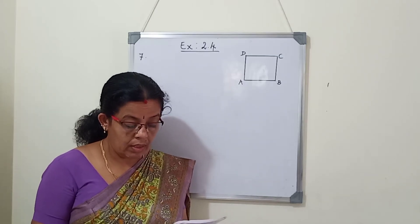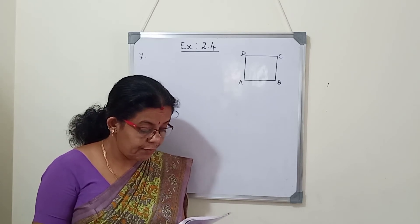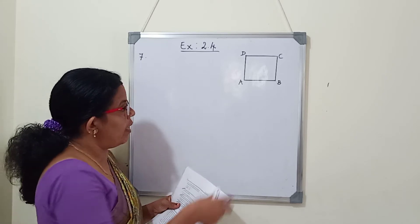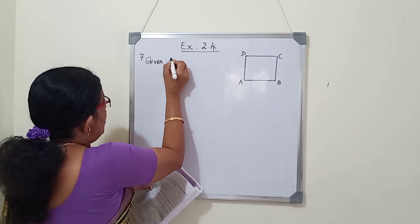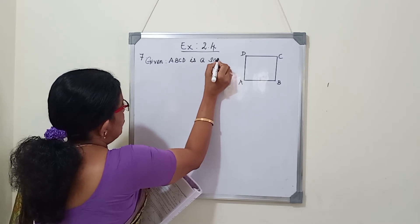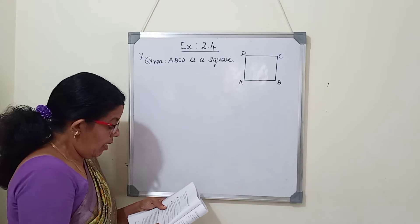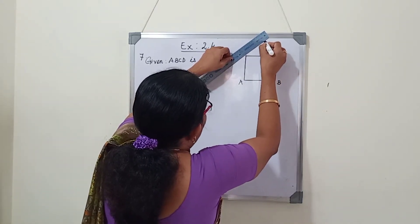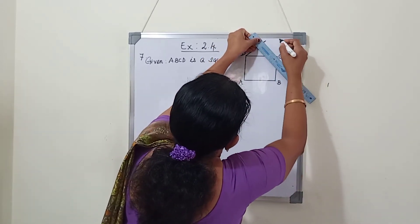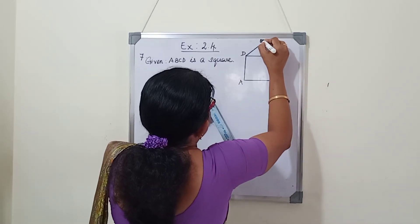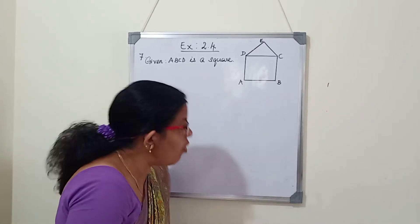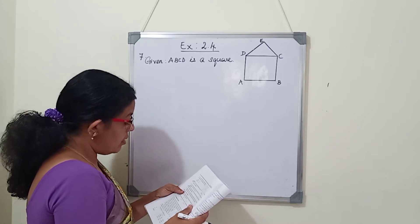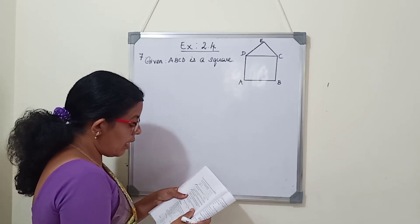Next question: Prove that the area of an equilateral triangle described on one side of a square is equal to half the area of the equilateral triangle described on one of its diagonals. So here ABCD is a square. We have to prove that the area of the equilateral triangle on one side equals half the area of the equilateral triangle described on the diagonal.